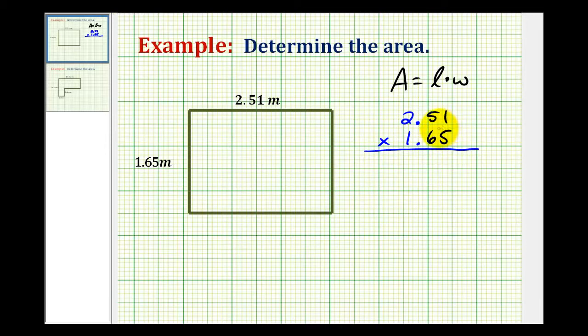When multiplying decimals we need to keep track of the decimal places. Notice how this first decimal has two decimal places and so does the second one, which means our product must contain the sum or four decimal places. So we're going to multiply like we normally do and then make sure our product has four decimal places to the right of the decimal point.